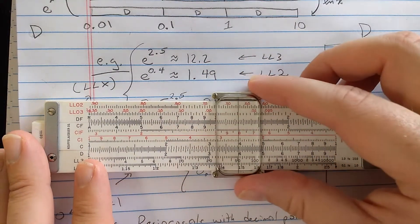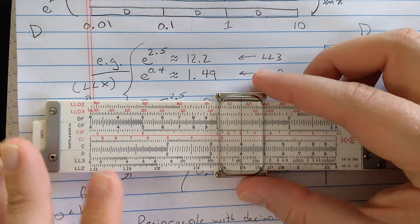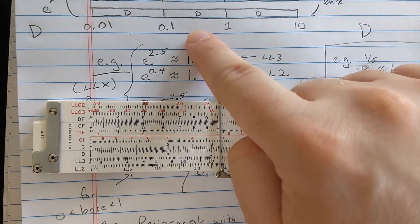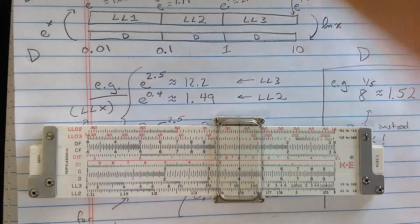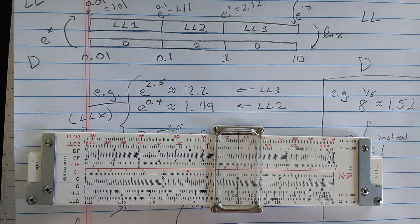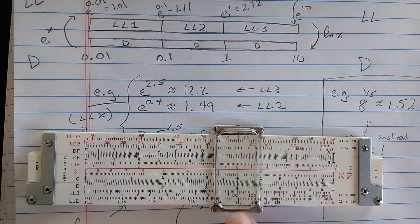You want to find E to the 0.4. You find the 4 on the D scale, but 0.4 is in this range, so you should read log-log 2. So log-log 2 has the result there, 1.49.